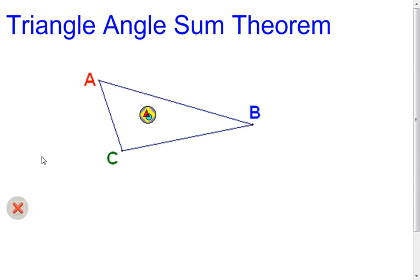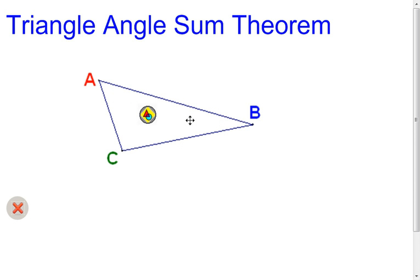To start, we're going to look at the triangle angle sum theorem, which is talking about the three interior angles — angle A, angle B, and angle C. If we were to measure those three angles and then add them together, you're going to find out that it's going to equal 180 degrees.